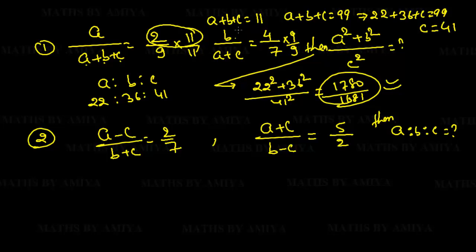To recap: find the relation, cross multiply to get A = 22, B = 36. Use either A+C = 63 or A+B+C = 99 to find C = 41. Then substitute into the expression to get the final answer.